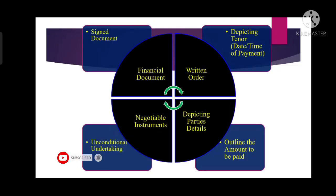These are the features of bill of exchange. The first feature is that it depicts the tenor. A bill of exchange depicts the tenor, meaning at what time or at what date the payment would be made — either the payment would be made immediately or after a specific period of time. So the bill of exchange depicts the tenor, meaning it specifies on what date it is payable.